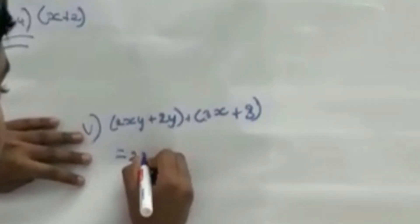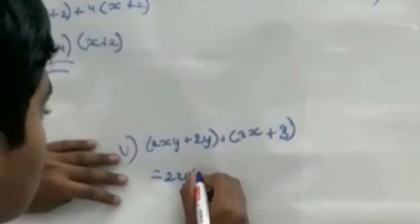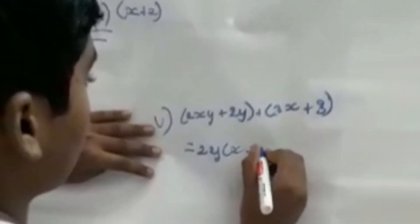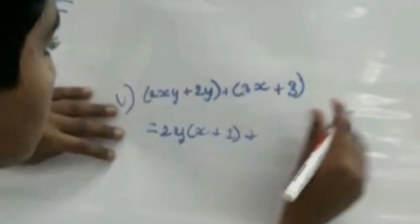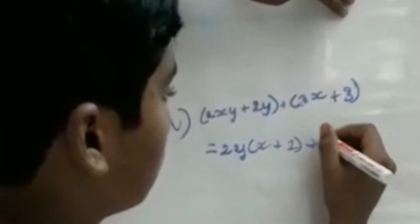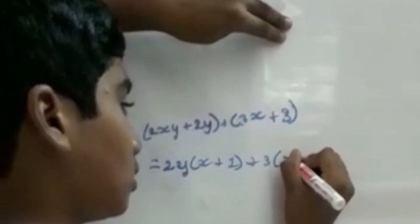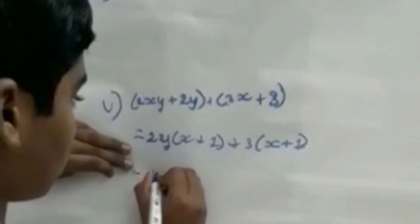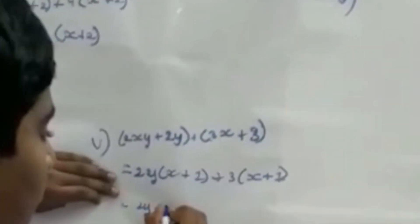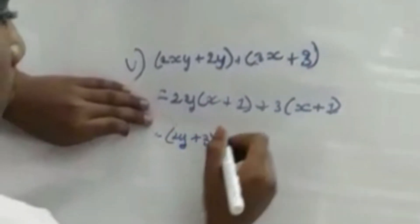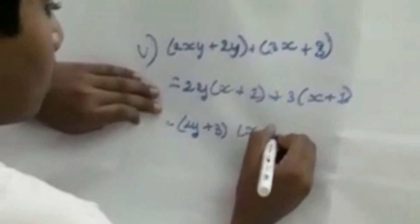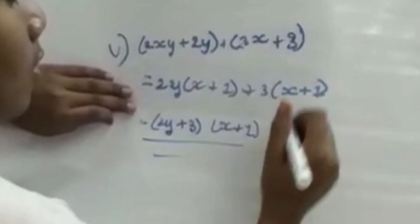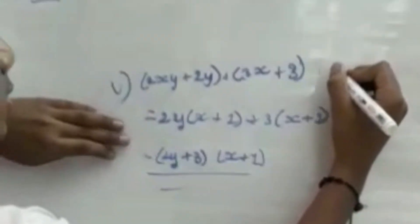Here I get 2y(x + 1) + 3(x + 1). Here I get the value (2y + 3)(x + 1), which is the factorized form of this equation. I hope you understood well. Thanks for watching.